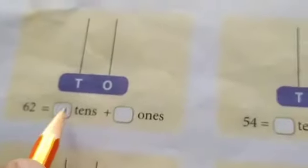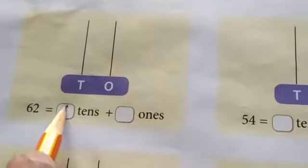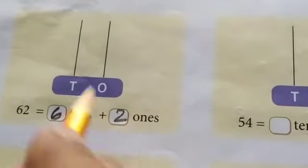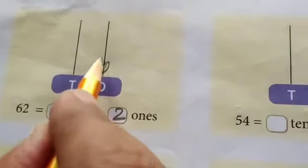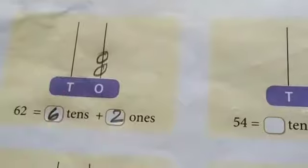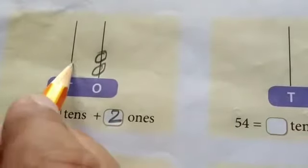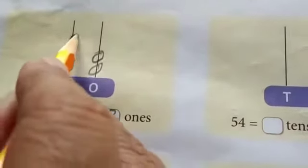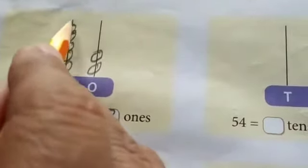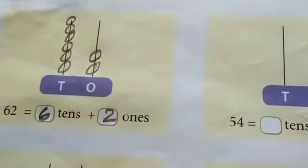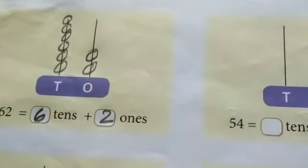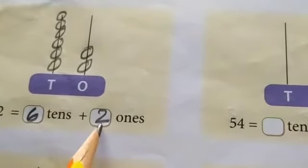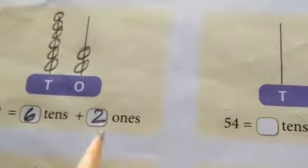Here, sixty-two. Sixty-two has six tens and two ones. Two ones and six tens. Six tens means sixty. Sixty plus two — sixty-two.